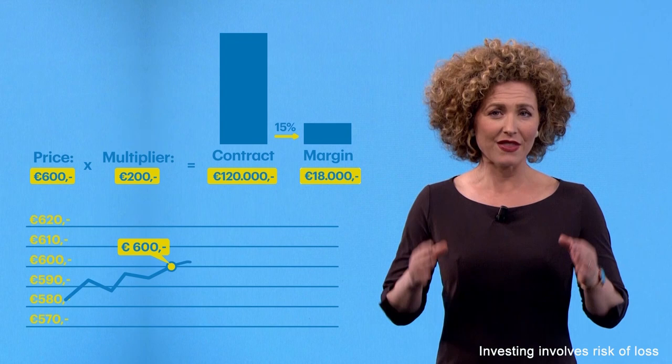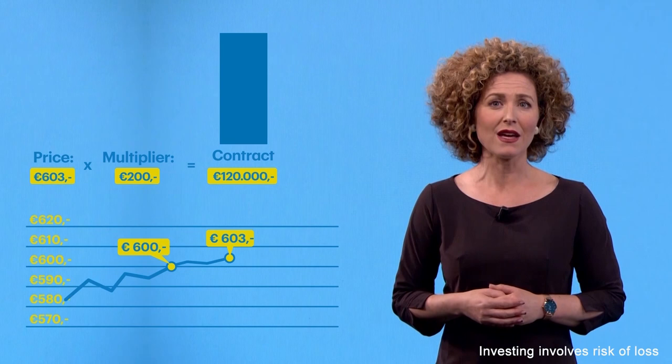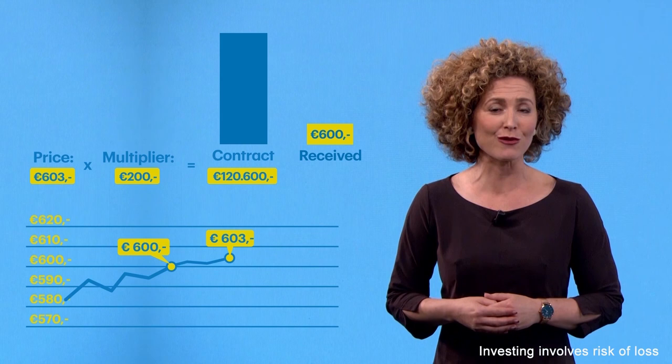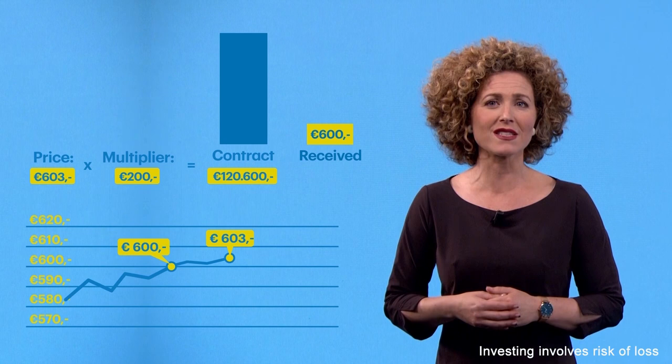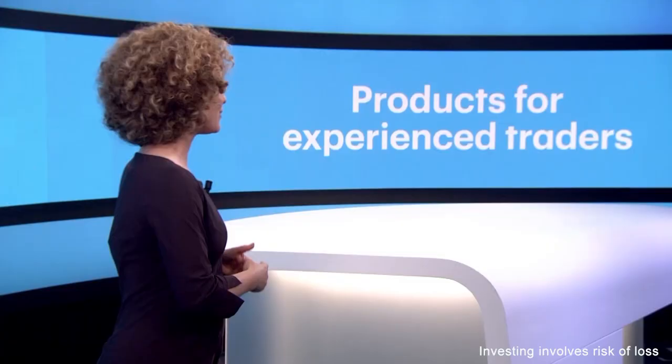Unlike options, futures are settled on a daily basis. This means that if the future has gained three points at the end of the trading day, you will receive three times the 200 euros multiplier for an amount of 600 euros. Do note that because the contract size is bigger than the margin, it is also possible to lose more than your deposit with futures.